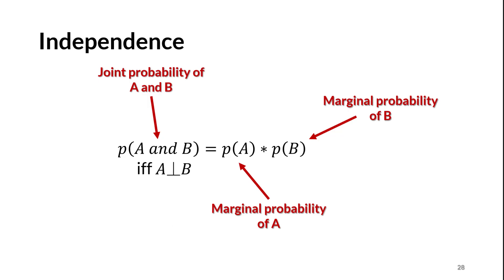Here's a lowdown on independence. If, and only if, events A and B are independent — sometimes written as A perpendicular to B — then the probability of A and B occurring is equal to the product of their individual probabilities. This statement is reversible: if the probability of A and B jointly occurring equals the product of their probabilities, then A and B are independent. The probability of A and B is also called the joint probability of A and B. Any time we talk about a variable without any other condition, such as probability of A or probability of B, this is referred to as the marginal probability.